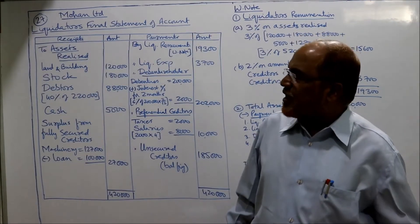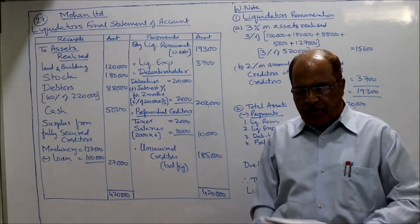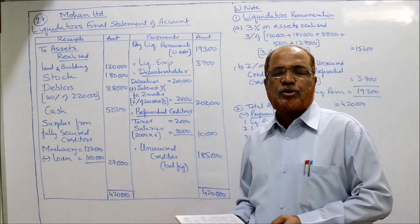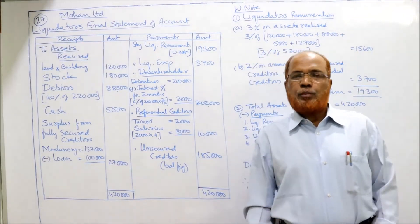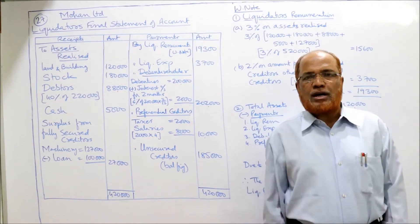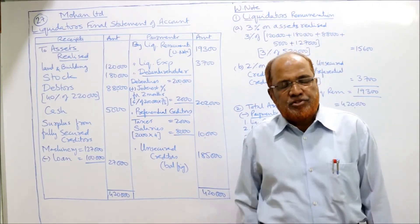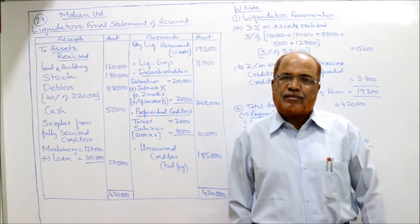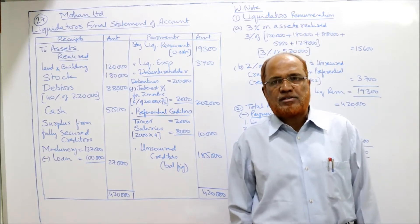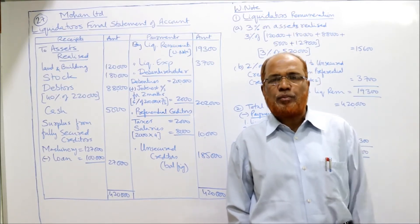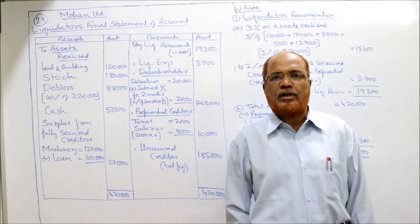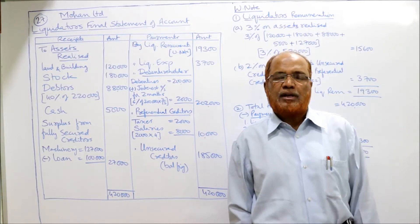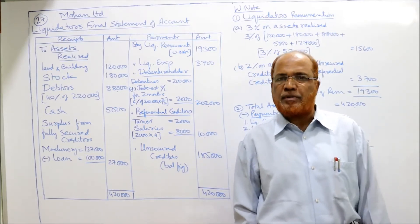We'll now start problem number 27. So far we have completed 26 problems. Hope you got a good command on the chapter of liquidation of companies. We have solved the problems on statement of affairs, and the last so many problems we have done on the liquidator's final statement of account, which is simply just like a receipts and payments account.